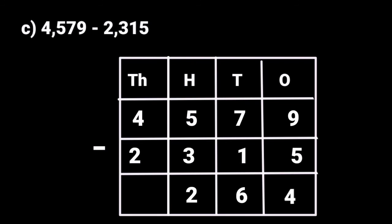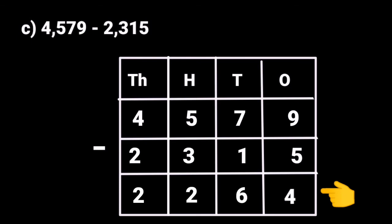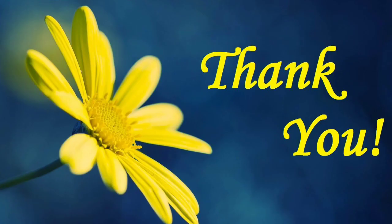See the 1000's place: 4 minus 2. Now we can subtract 2 from 4, so we get the answer 2. 4,579 minus 2,315 is equal to 2,264. I hope you all understand. We will see you in the next class. Thank you students.